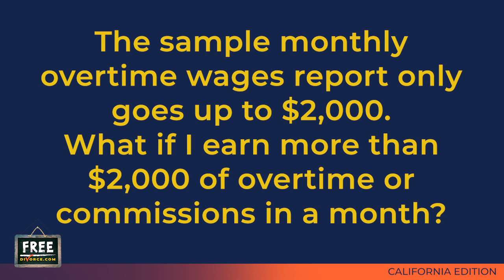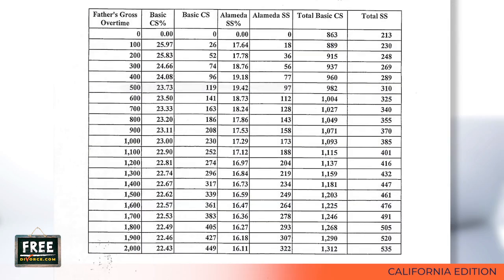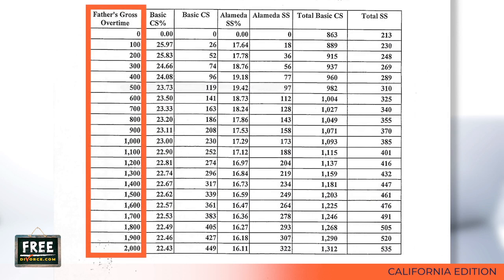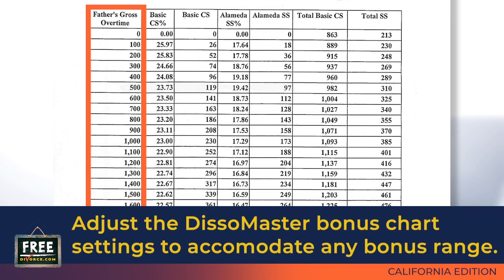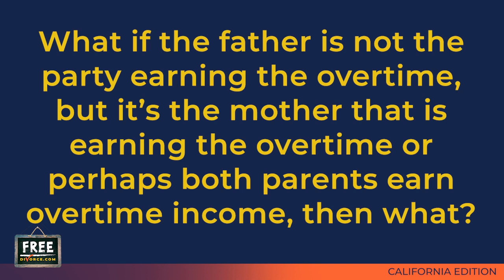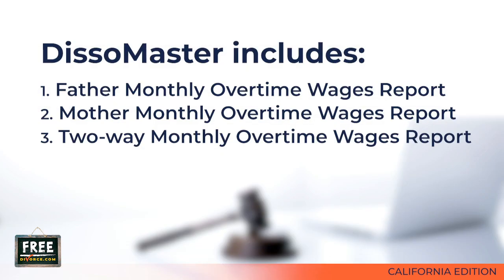The sample monthly overtime wages report only goes up to $2,000. If you earn more than that, the Dissomaster Father Monthly Overtime Wages Report can be expanded to any amount — you can adjust the settings so amounts increase by $500 or $1,000 increments, covering a range from $0 to $1 million or whatever range you need. If it's the mother earning overtime rather than the father, or if both parents earn overtime, the program also includes a mother monthly overtime wages report and a two-way report for cases where both parties earn overtime pay.